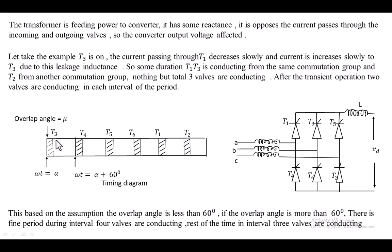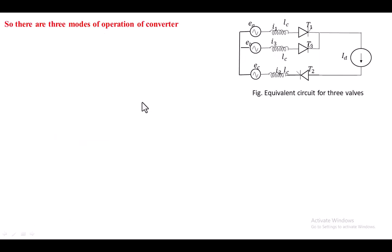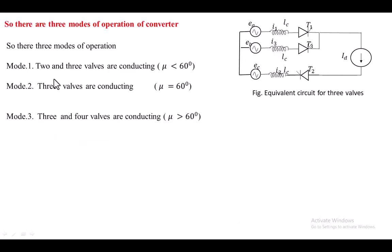If the overlap angle is less than 60 degrees, due to the overlap angle, three devices are conducting. After the overlap angle, two devices are conducting. If the overlap angle is exactly equal to 60 degrees, then three devices are always conducting. Based upon this overlap angle, the operation of the converter has three modes: the first mode is the overlap angle less than 60 degrees, the second mode is equal to 60 degrees, and the third mode is greater than 60 degrees. In this lecture, we are going to discuss the case where the overlap angle is less than 60 degrees.